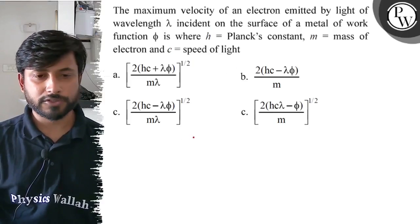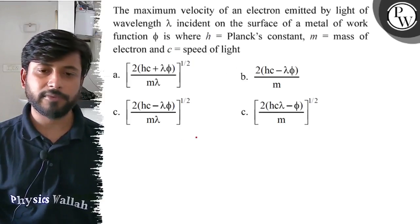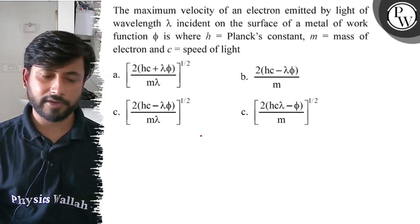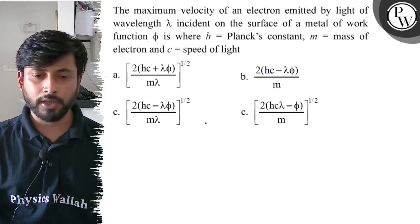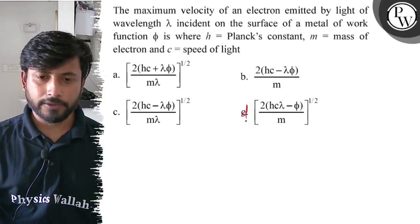We have four options: a) [2(hc + λφ)] / mλ, b) 2(hc - λφ) / m, c) [2(hc - λφ)]^1/2 / mλ, and d) [2(hc - λφ)]^1/2 / m.